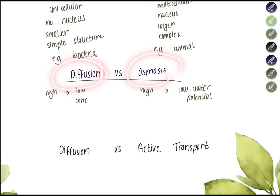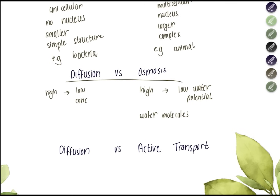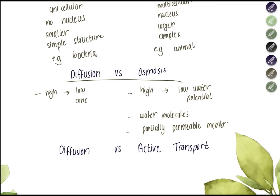Diffusion is the movement of particles from a region of higher concentration to lower concentration. Osmosis is specifically the movement of water molecules from a region of higher water potential to a region of lower water potential, and it must pass through a partially permeable membrane — such as a cell membrane. When water moves through the cell membrane in this way, that is considered osmosis.